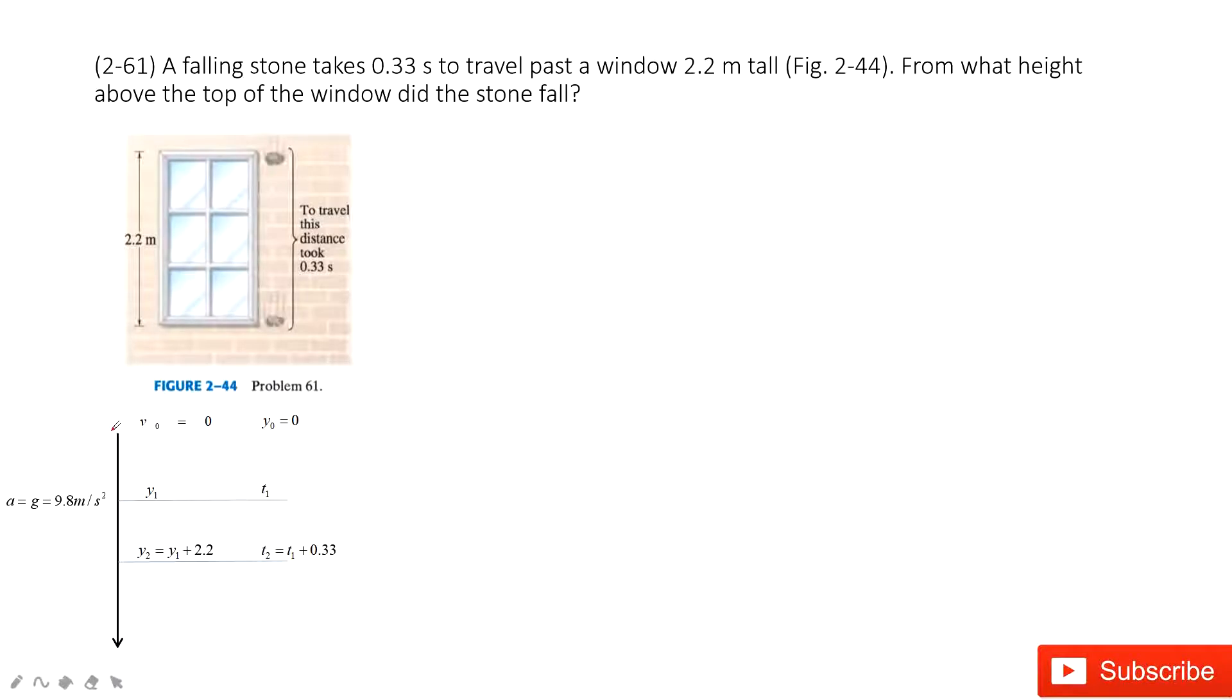Then we choose the reference point as where the stone is just released. So the initial velocity is 0. The initial position is 0.